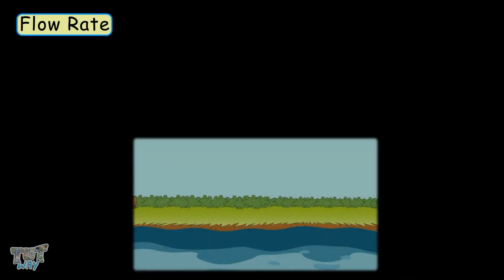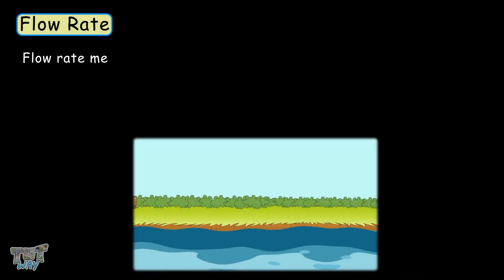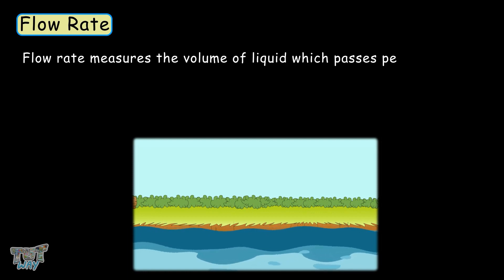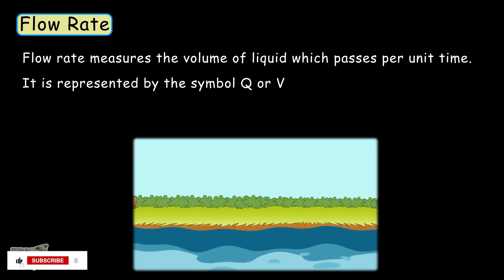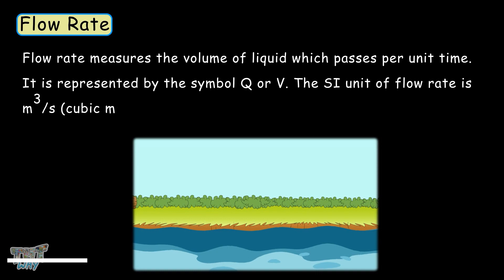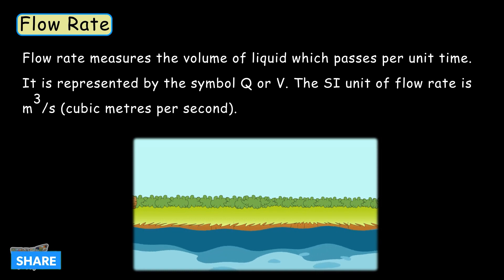Now here comes the term flow rate. What is it? Flow rate measures the volume of liquid which passes per unit of time, and it is represented by the symbol Q or V. The SI unit of flow rate is cubic meters per second.